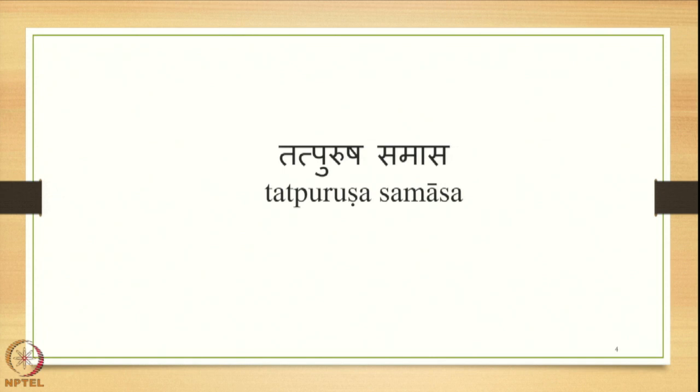In this course we are focused on the Tathpurusha Samasa. Tathpurusha is one of the important major types of Samasas in Sanskrit: Avyayibhava, Tathpurusha, Bahuvrihi and Dvandva, in that order as stated in the Grammar of Panini. Tathpurusha Samasa also has many varieties which other types of Samasas do not have, and Panini has composed a number of Sutras to explain its features compared to the other three types.